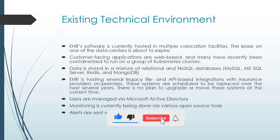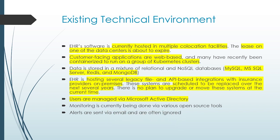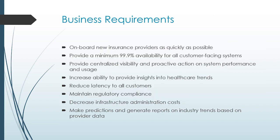Looking at the technical environment, some phrases stand out. It is currently hosted in multiple co-location facilities, the lease of one data center is about to expire, and customer-facing applications are web-based and containerized to run on Kubernetes clusters. You can directly map the Kubernetes cluster to something that supports Kubernetes on Google Cloud — either Anthos or Google Kubernetes Engine. The databases — MySQL, MSSQL Server, Redis, and MongoDB — can be correspondingly mapped to appropriate Google Cloud services.